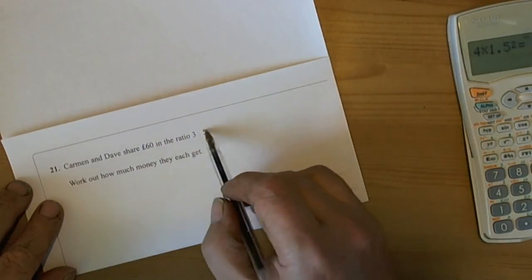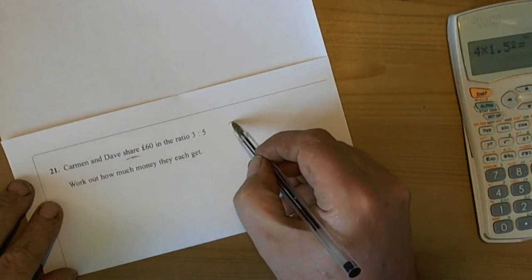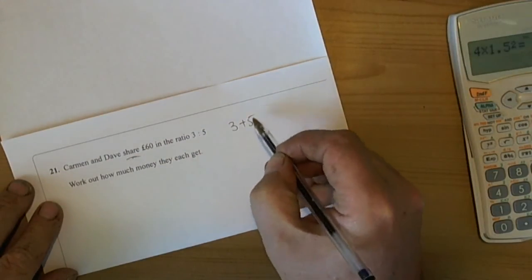Carmen and Dave are going to share some money in a ratio. So that key thing, share, means that we've got to find out how many parts we've got for the ratio altogether.